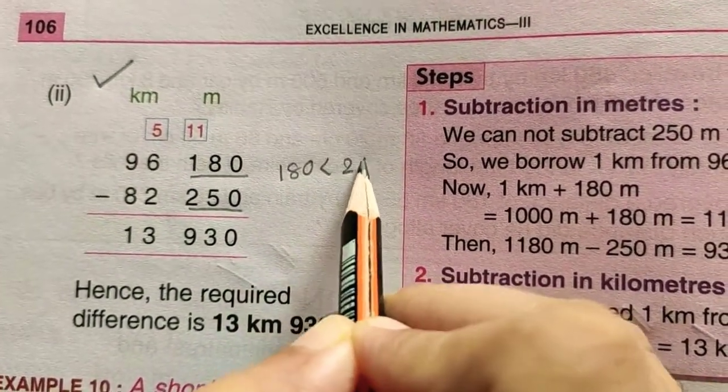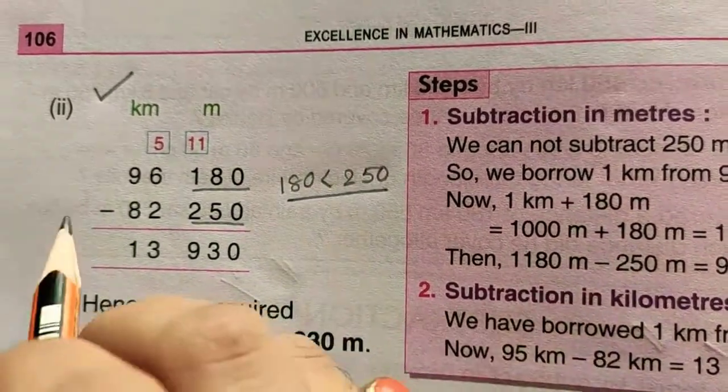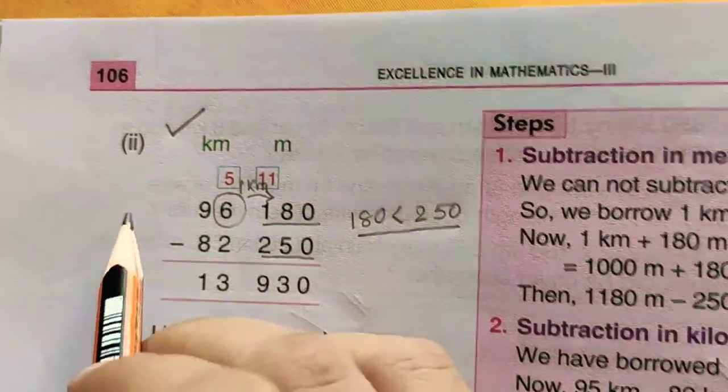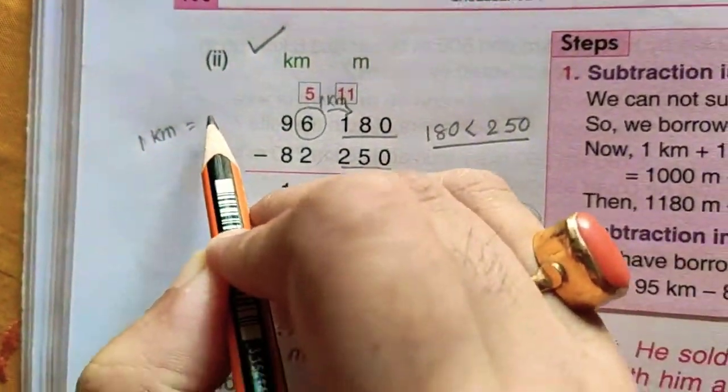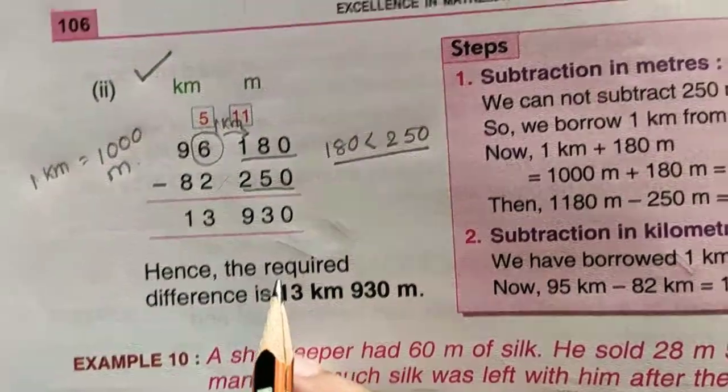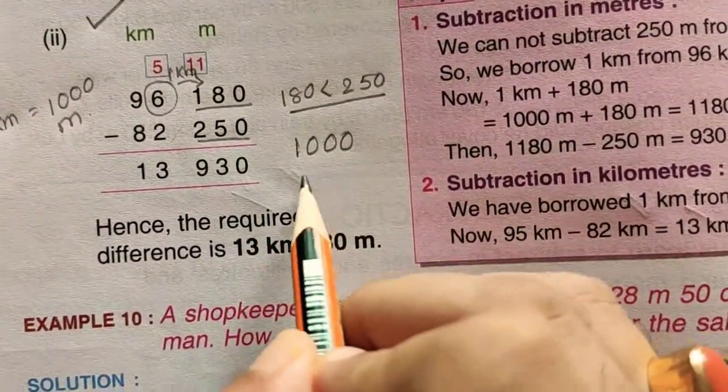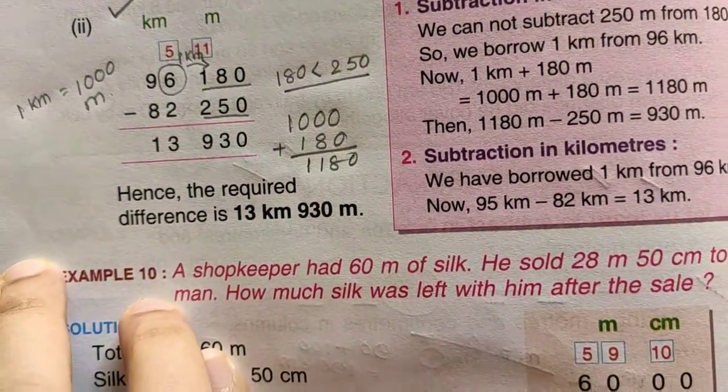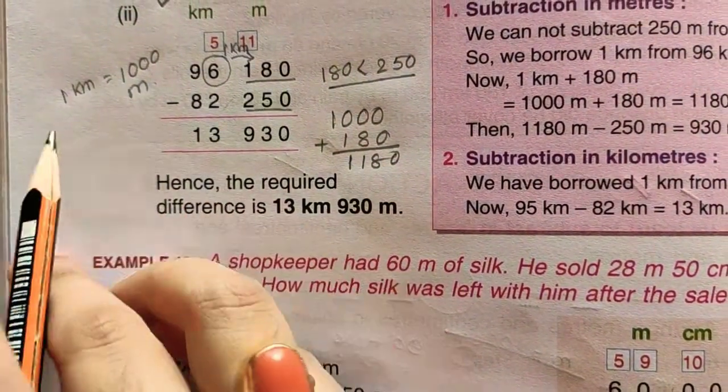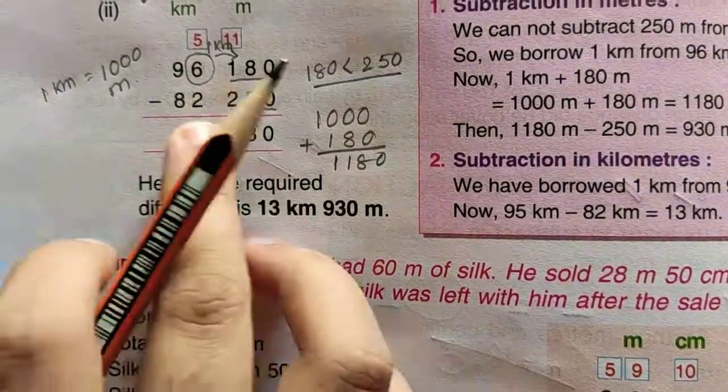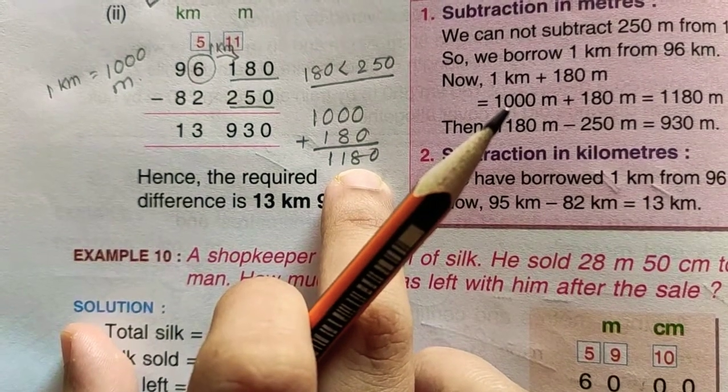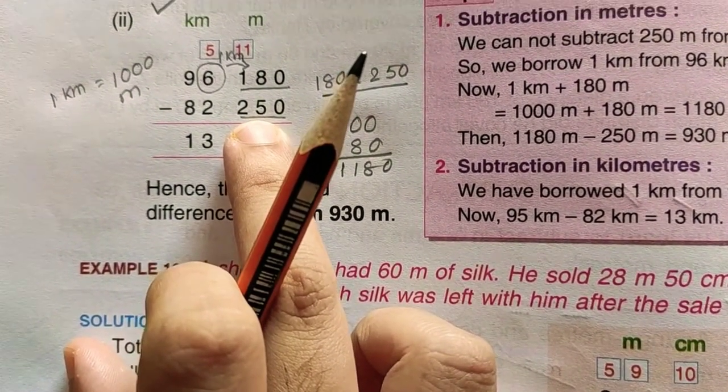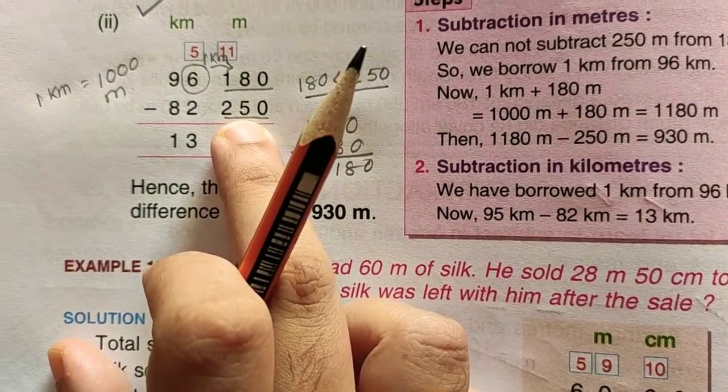Now we have to start the subtraction from the meter column, but look here, 180 is less than 250. So we have to borrow. What do we borrow? We borrow 1 kilometer from here. 1 kilometer is equal to 1000 meter. So what should we do? 1000 plus 180, that means 1180. So we borrowed 1 kilometer which became 1000 in the meter place, and we add it with the meter value, and that will be 1180 meter. Now 1180 is greater than 250, so we can easily subtract 250 from 1180. So the answer will be 930 meter.